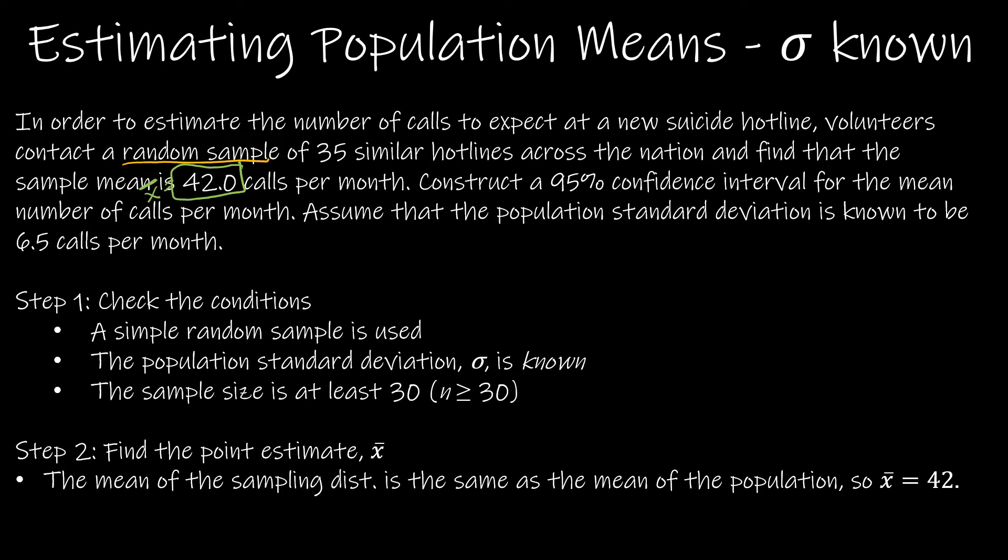So sample mean is x̄, 42 calls per month. Construct a 95% confidence interval. Okay, so let's pick a new color. This is going to be C for the mean number of calls per month. Assume that the population standard deviation is known to be 6.5 calls per month. That guy is sigma. Remember, we said sigma is known. So sigma in this case, 6.5 calls per month.